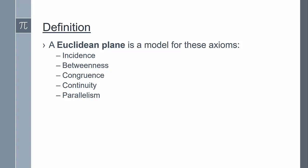We define a Euclidean plane to be a model for all of the Hilbert axioms: incidence, betweenness, congruence, continuity, and parallelism. And so we'll end with an example of a Euclidean plane.